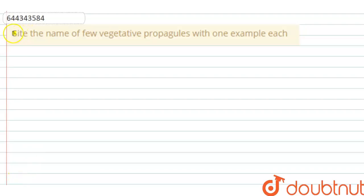The question says cite the name of few vegetative propagules with one example each. So here we have to cite the name of few vegetative propagules with the example.